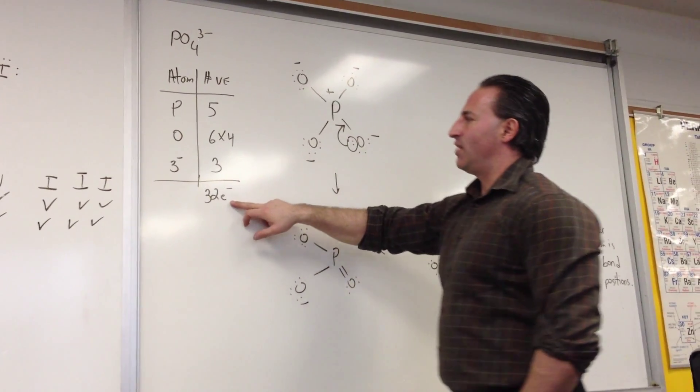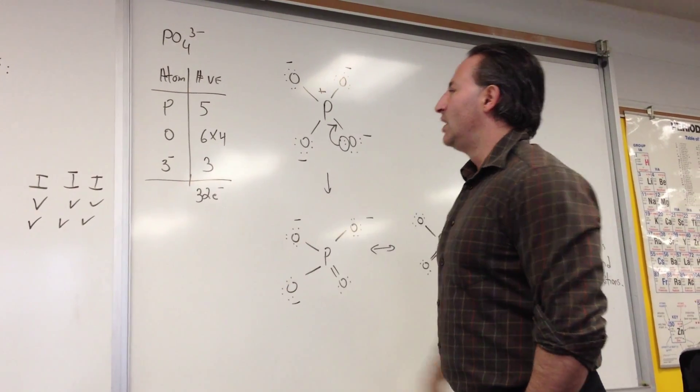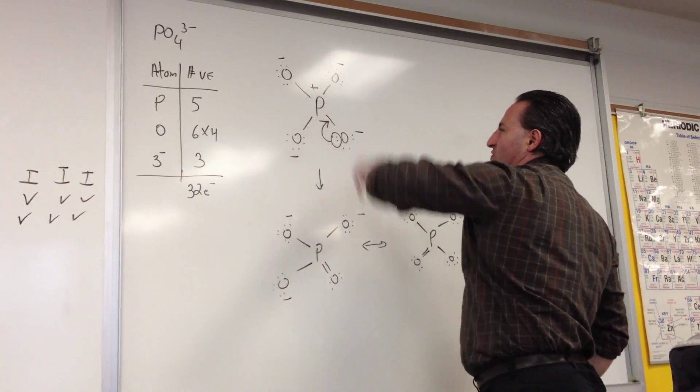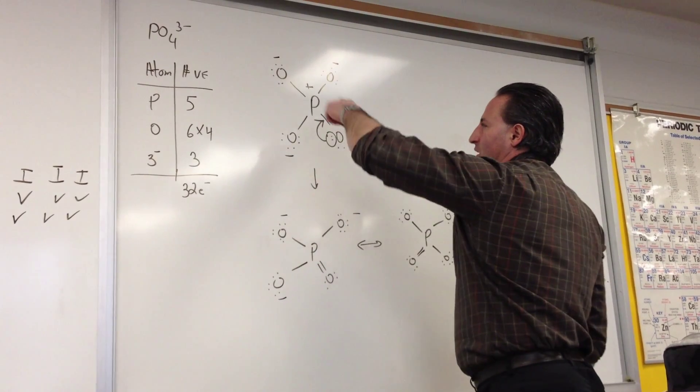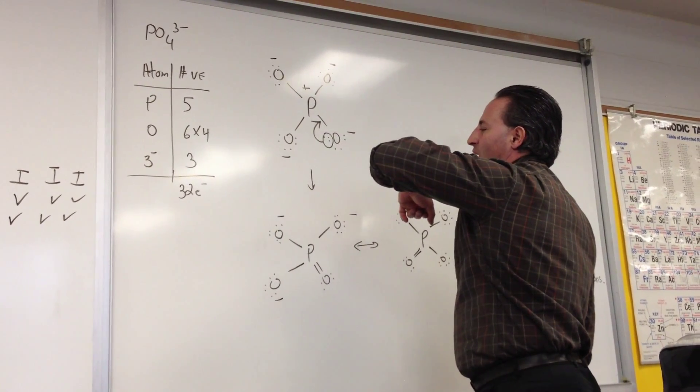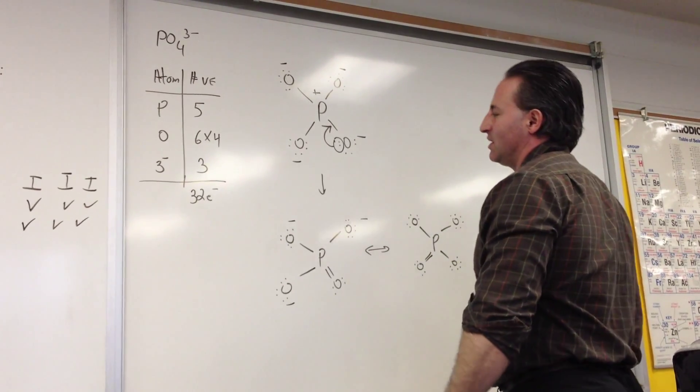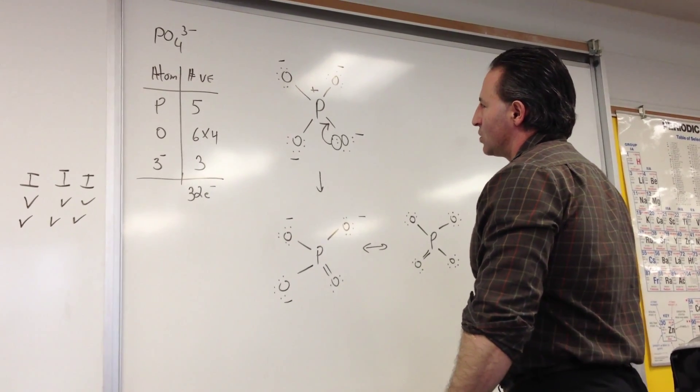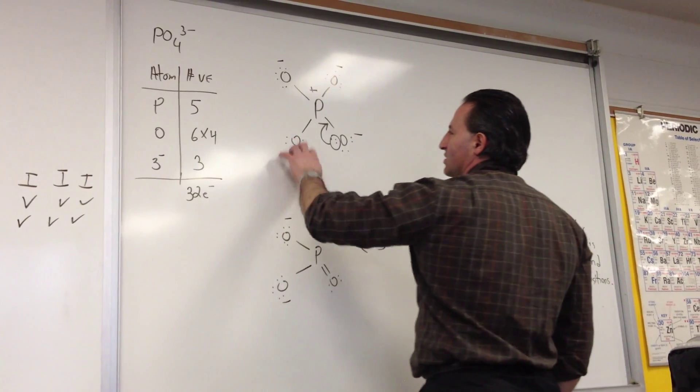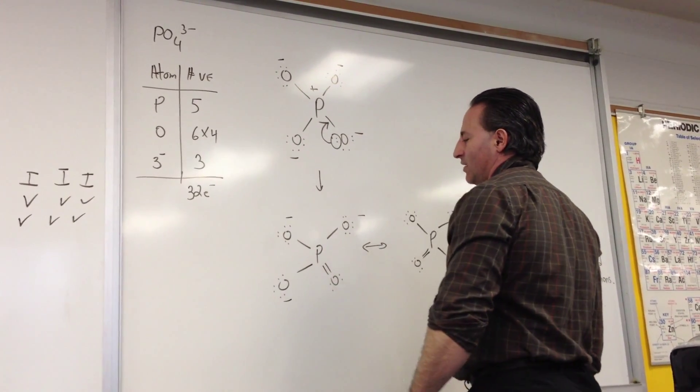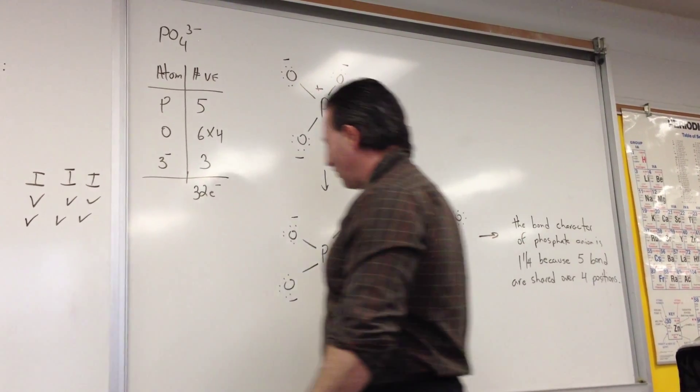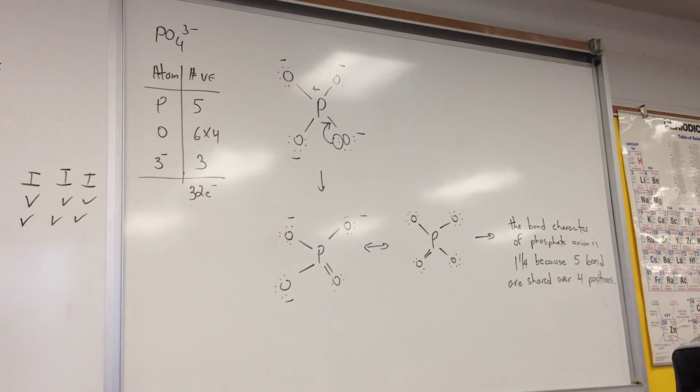So the total number of electrons in the phosphate anion is 32. We begin by writing the phosphorus atom as the central atom. We connect each oxygen atom with a bond. That uses up 8 electrons right there, so we still have to use up 24. So what we do is we'll put 6 on each oxygen atom and then see how that works.